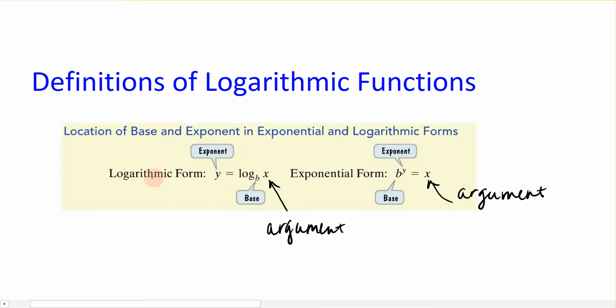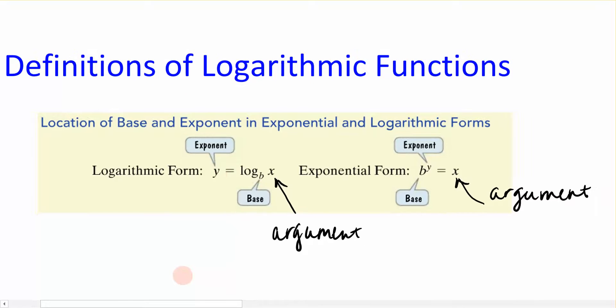So, if I have a logarithmic form, the logarithmic form of my function looks like y equals log base b of x. Now, to define a couple of terms here that we're going to be using, y is considered the exponent, b in this particular scenario is considered the base, but anything down here would be the base, and then x is what we call the argument.